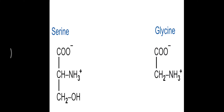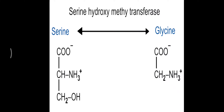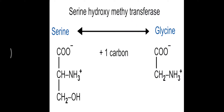Looking at the structures, glycine and serine have similar structures except for the hydroxymethyl group — OH and CH₂ together make the hydroxymethyl group. Serine and glycine can be interconverted: serine can be converted into glycine and vice versa. This interconversion is carried out by the enzyme serine hydroxymethyl transferase, which transfers the hydroxymethyl group from serine to make glycine, or adds it back to glycine to make serine.